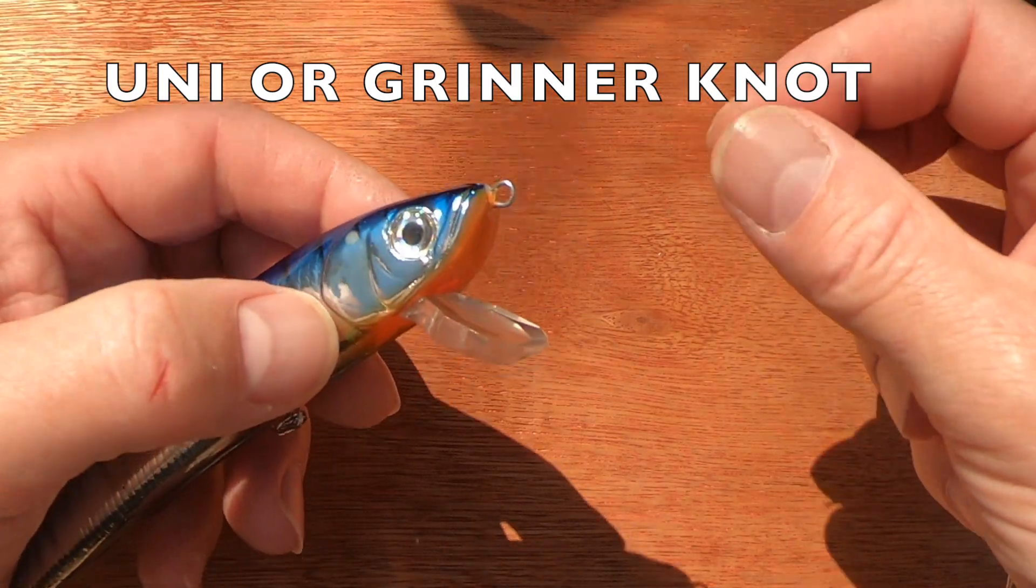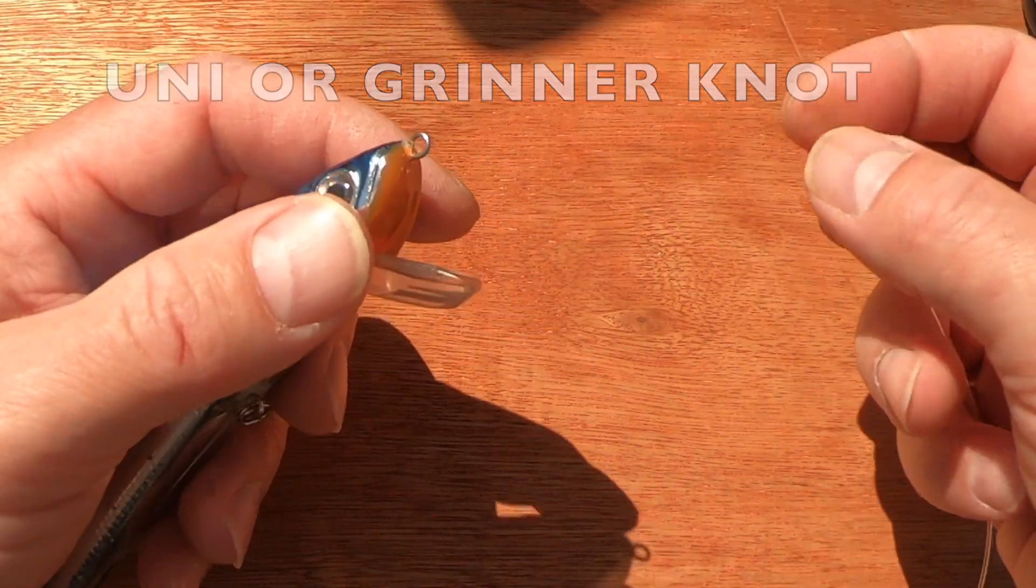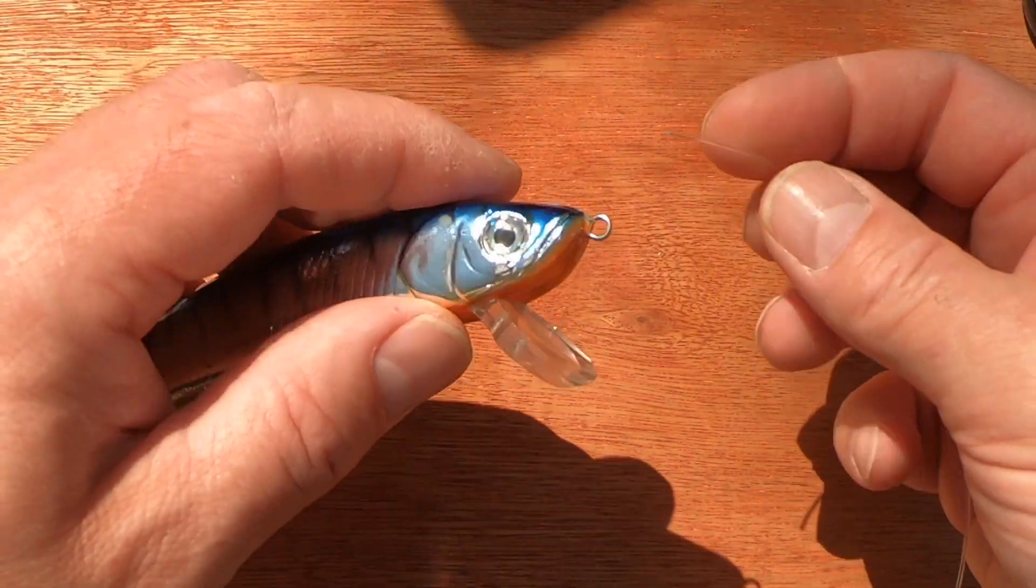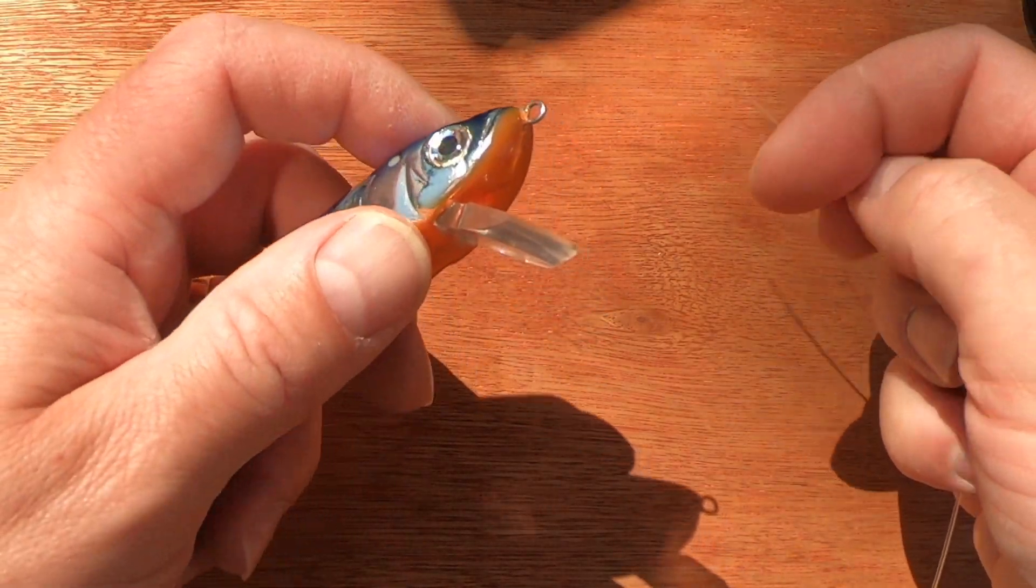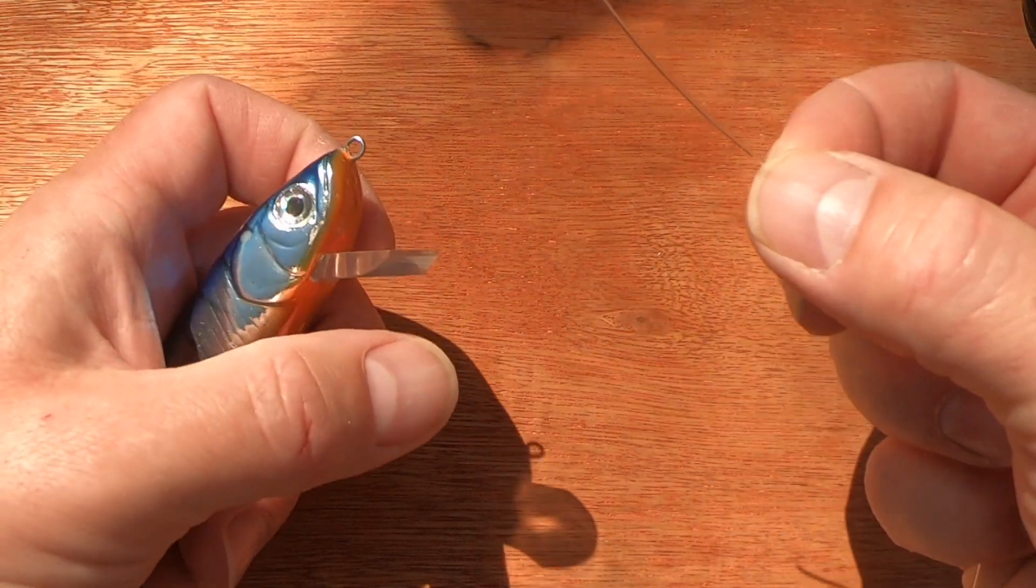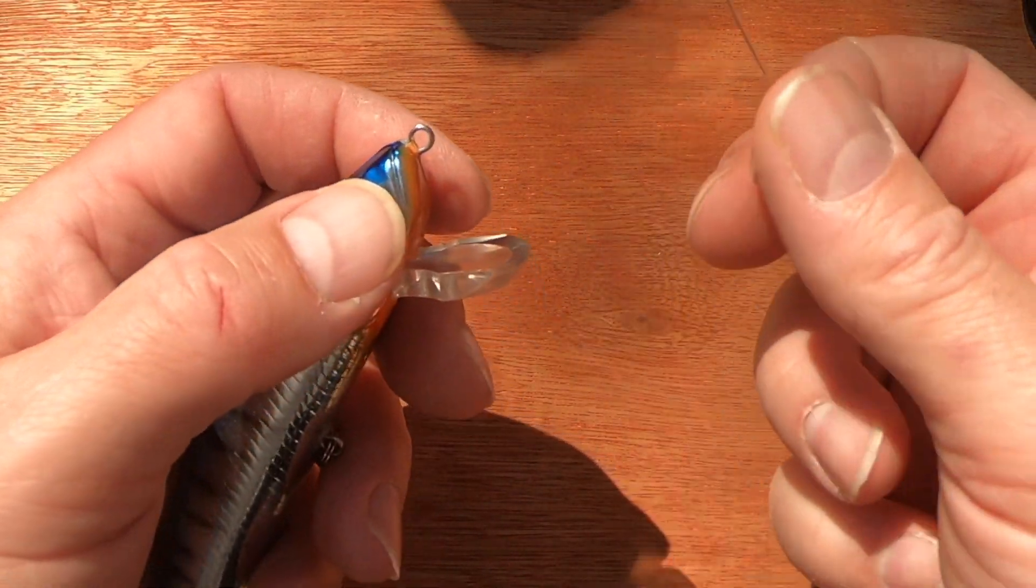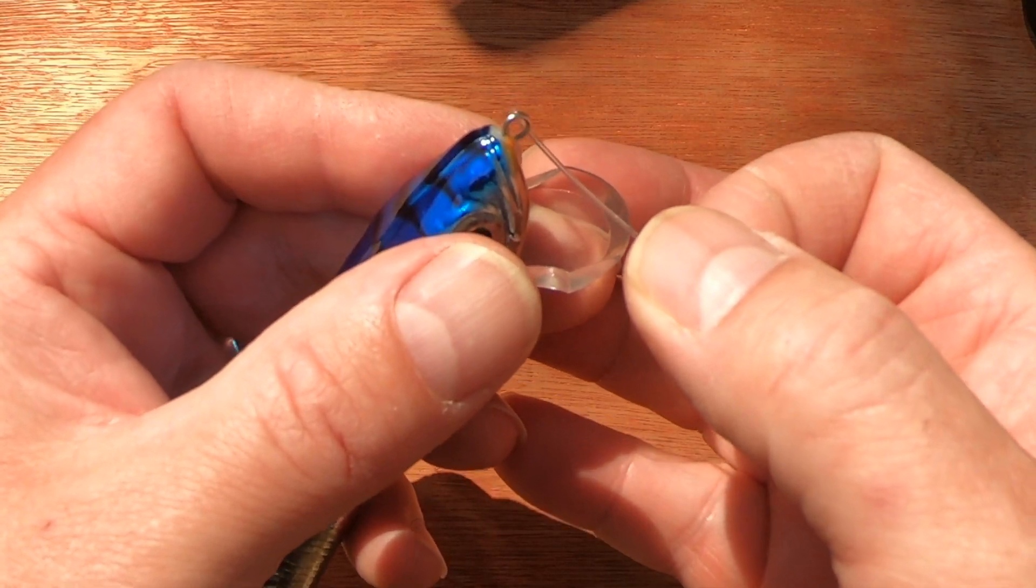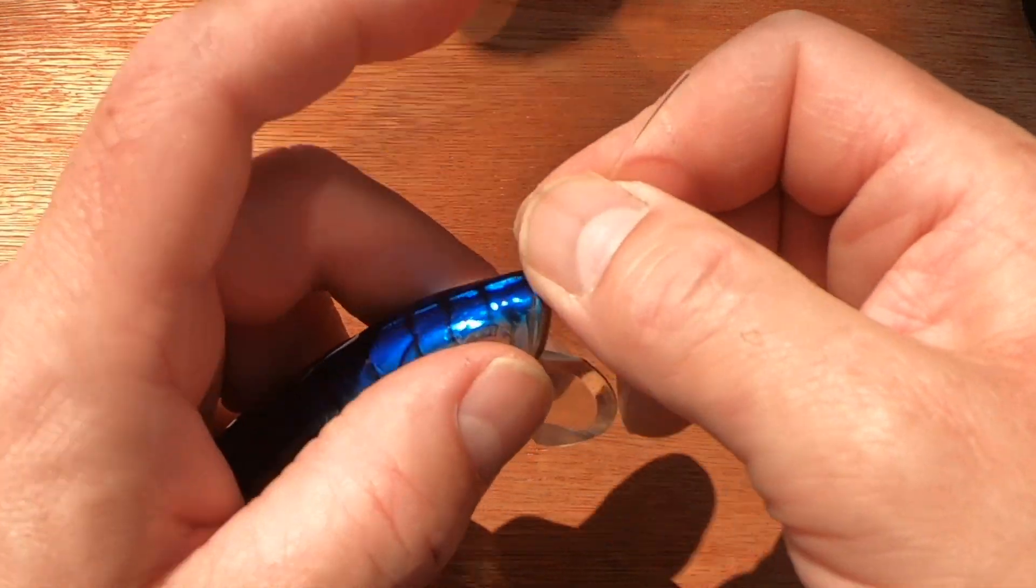Hi, I'd like to show you today a few of the knots that I use. The first knot is the Grinner knot, some call it the Uni knot. For demonstration purposes I'm using a lure, easier to see, and this is 80 pound line.